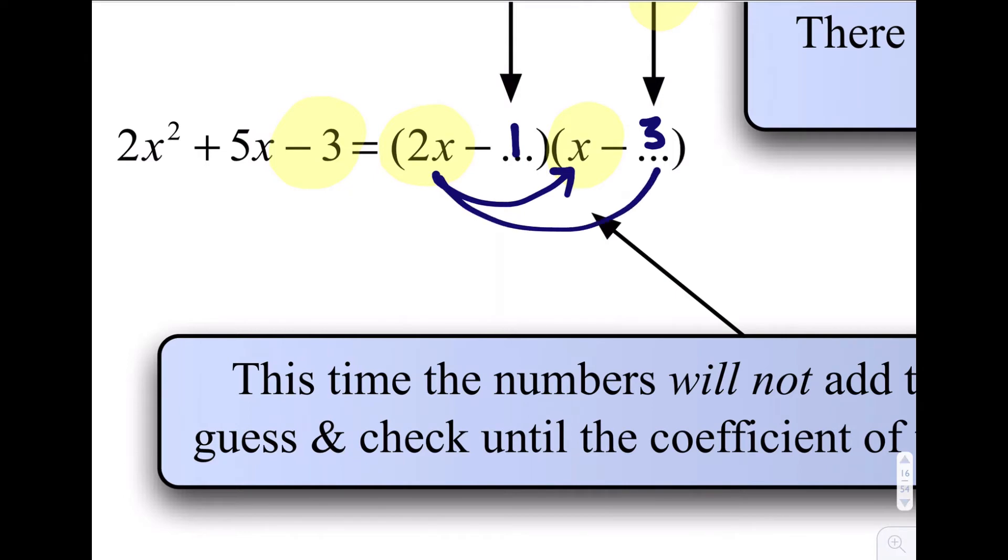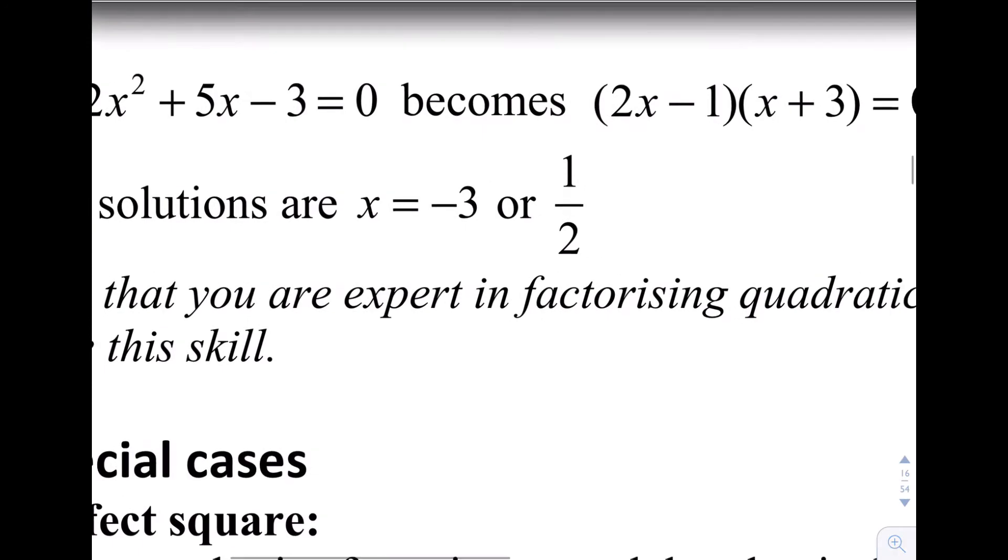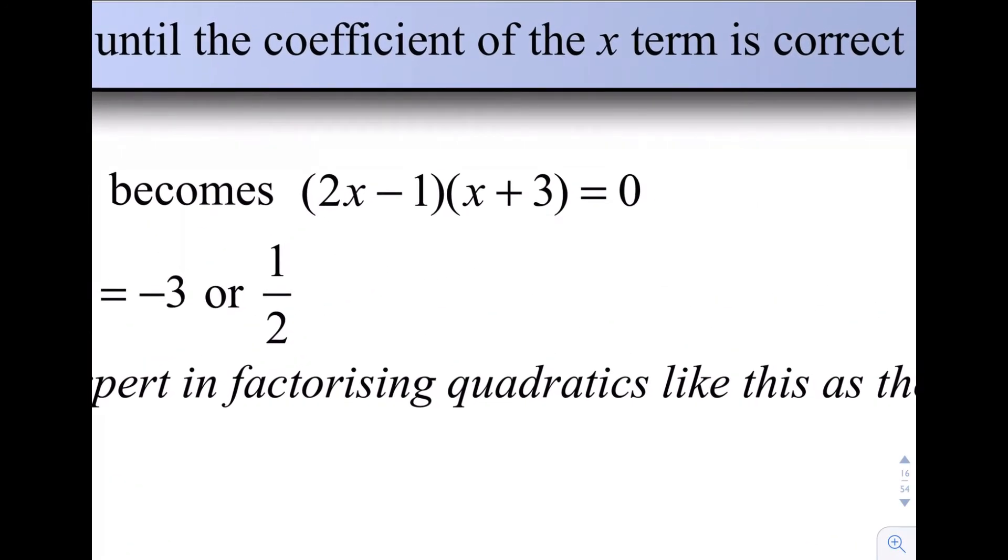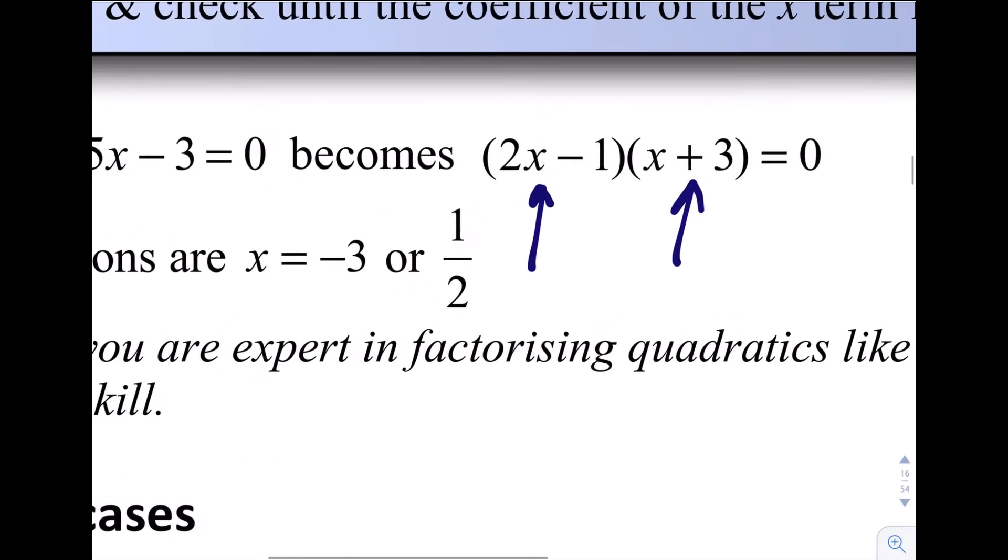2x times 3 will give me a 6x term, and 1 times x will give me 1x. Now, given that I want plus 5x, I'm going to go plus 6x and minus 1x. That will give me 5x. And then negative 1 times positive 3 gives me negative 3. So that is good. This is how we factorize that expression there. So once we get that, and got that equal to 0, the two values of x that I need for this bracket, if x is a half, then this is going to be equal to 0. If x is negative 3, this is going to be equal to 0. So the two values of x that I want are a half and negative 3.